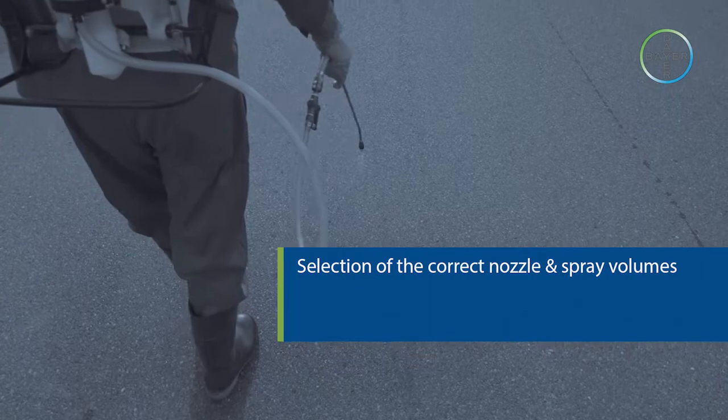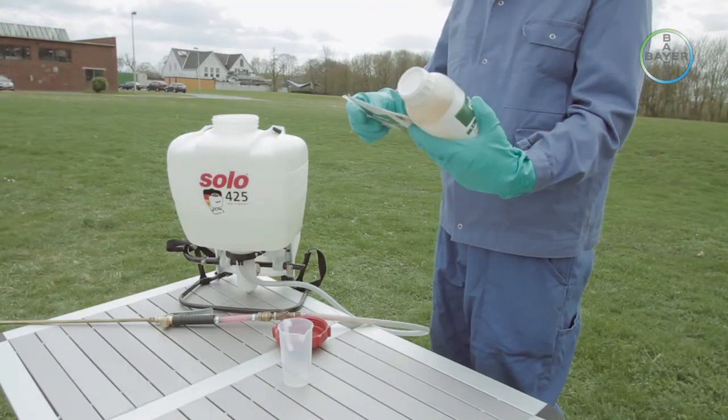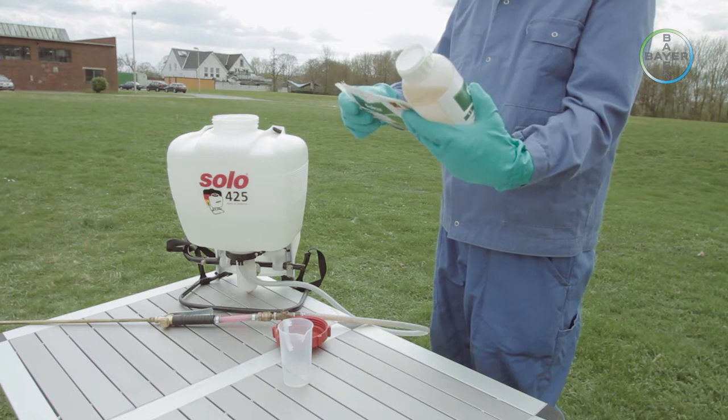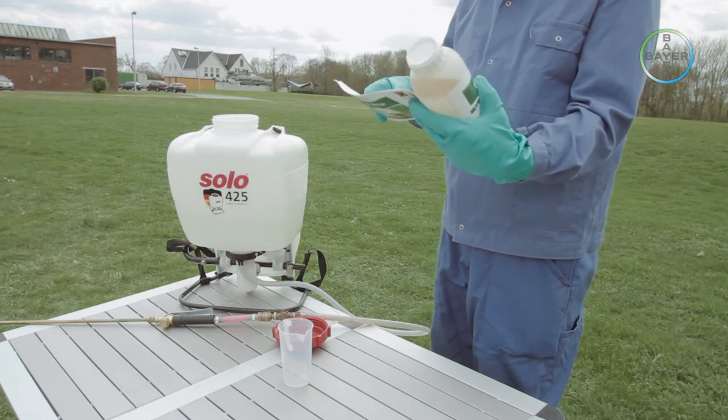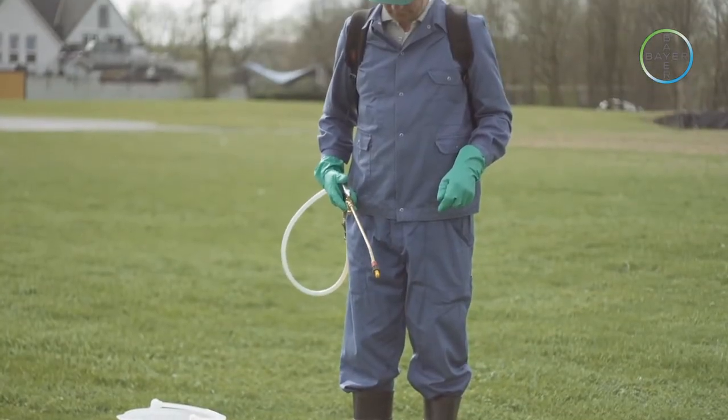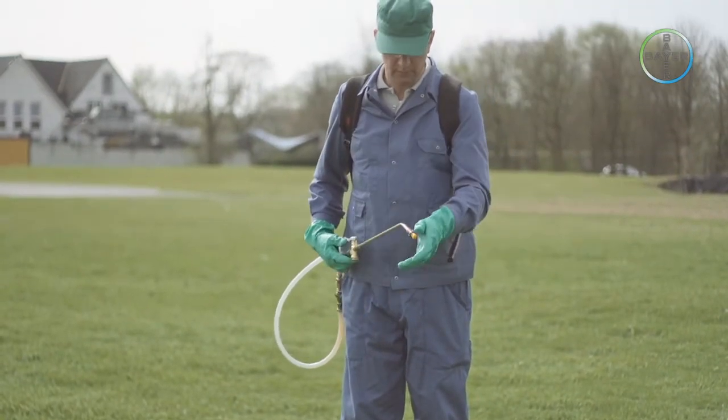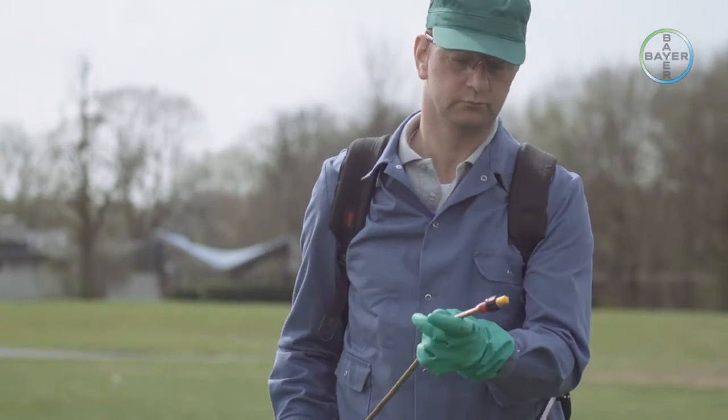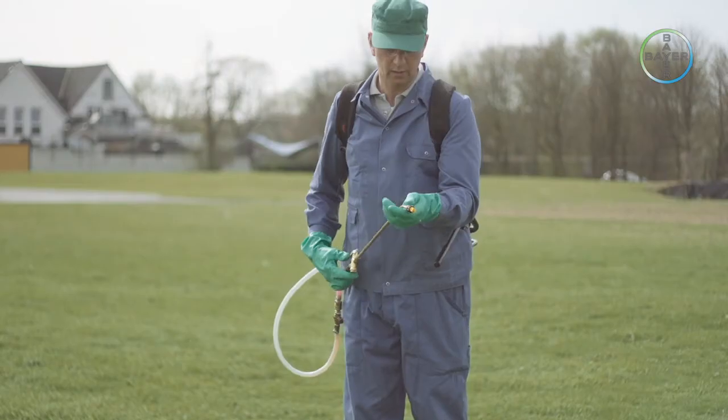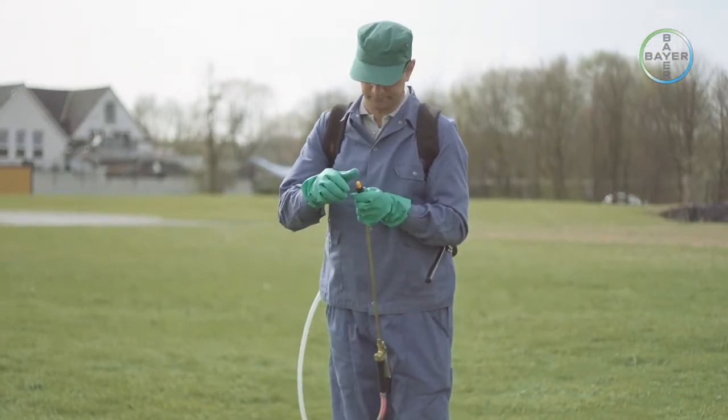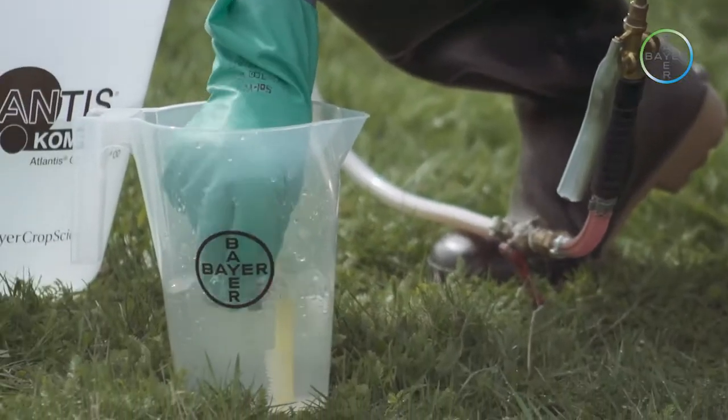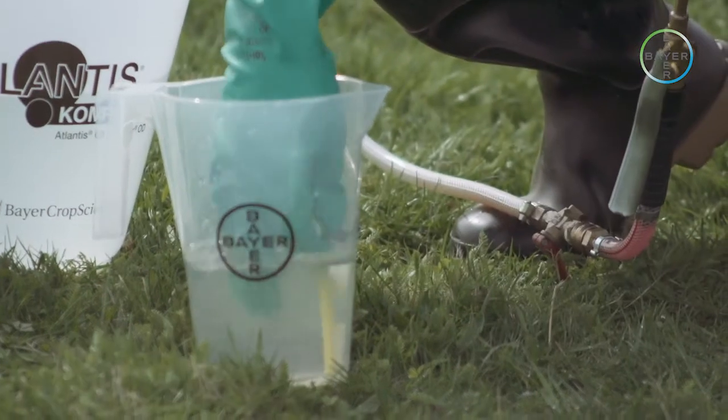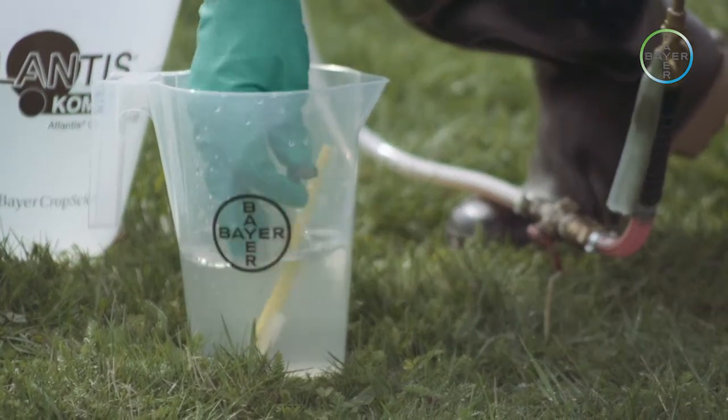Selection of the correct nozzle and spray volumes. Initially, you should consult the label of the product to be used and find out its recommended dose volume and recommended spray quality. This will enable you to determine the correct nozzle to be used. Based on the information of the product label, the existing nozzle should be examined to ensure that it is of the correct type and size. Even if it is already the correct one, the nozzle and filters should be removed and cleaned with water and a soft brush.